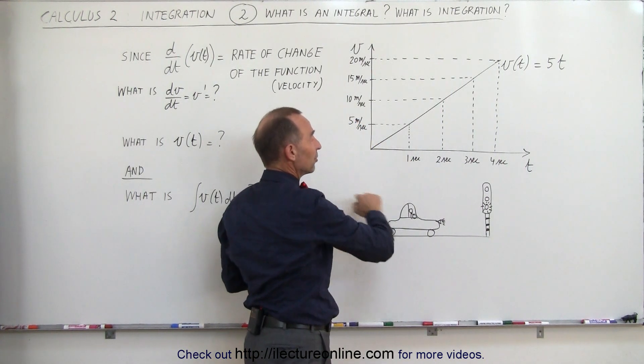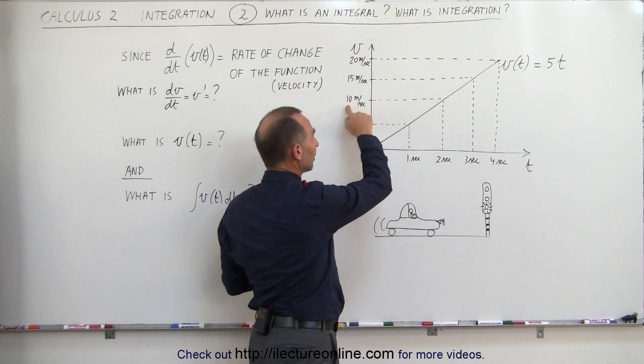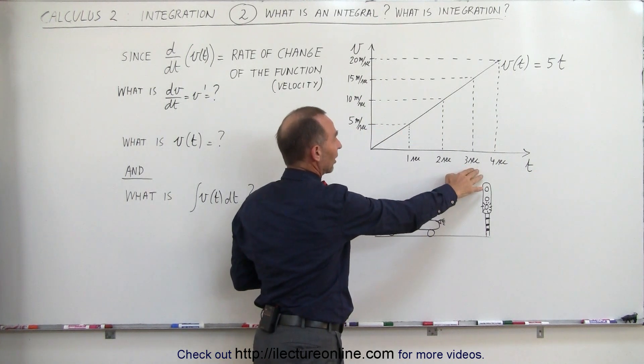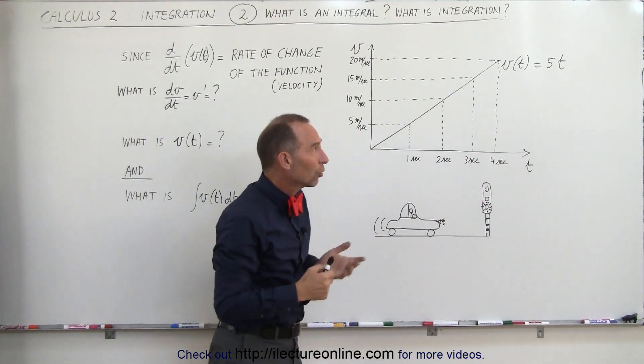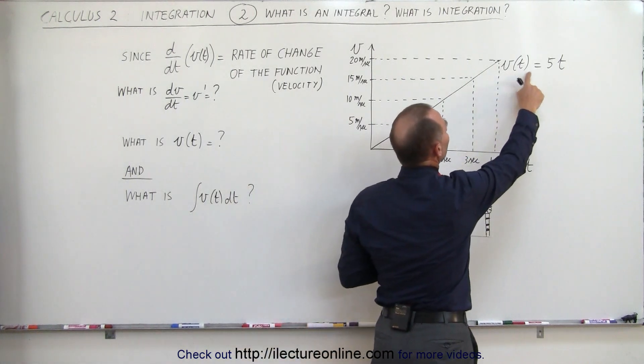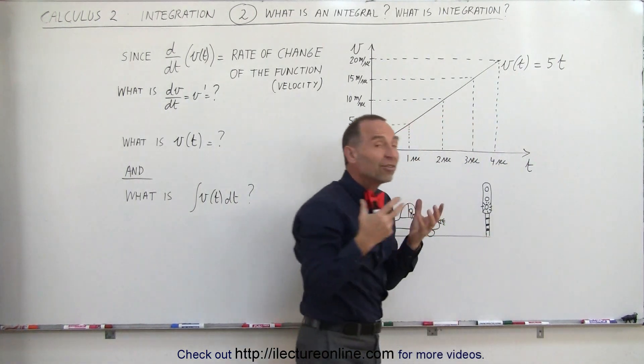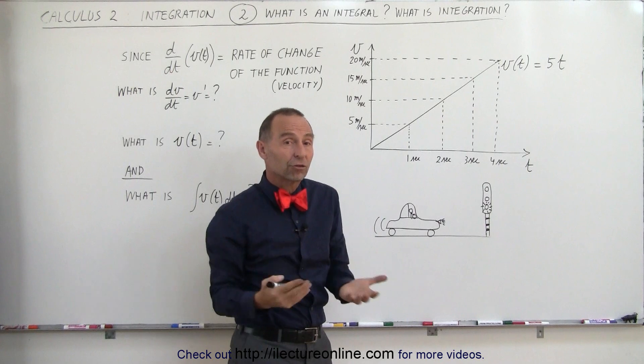You can see that after one second, the car is moving at 5 meters per second. After two seconds, it's moving at 10 meters per second. After three seconds, it's moving at 15 meters per second. So the equation v(t) = 5t represents the velocity of the car as a function of time.